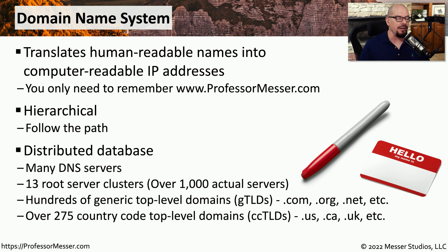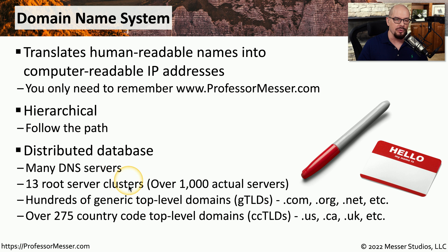This is also a very distributed database because we have many different DNS servers on the internet. There are 13 root server clusters. In actuality, this consists of over 1,000 different servers.